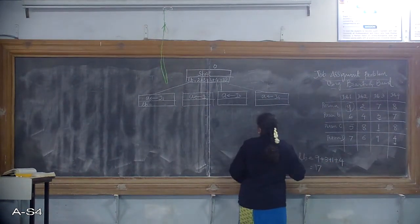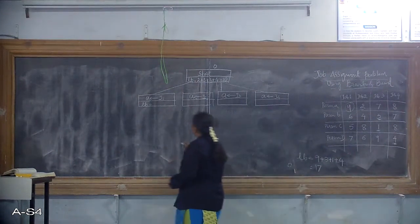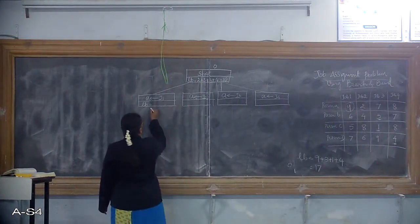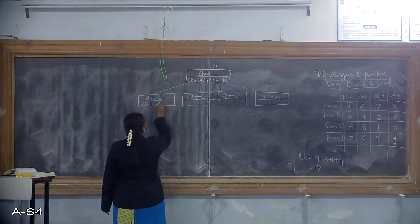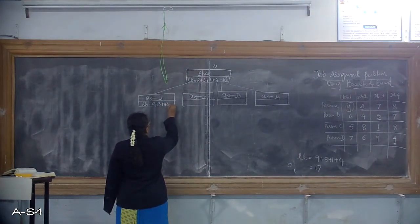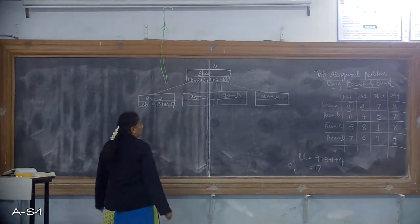The lower bound value for the first node is 17.